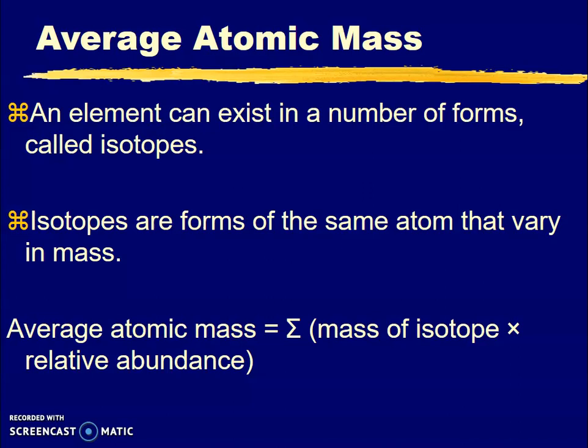For example, all the different isotopes of carbon have six protons. That's not what changes. All isotopes of iron have the same number of protons—they have 26 protons. Protons don't change; that's the identity.